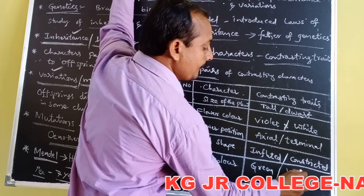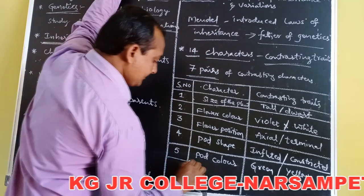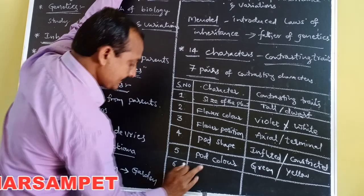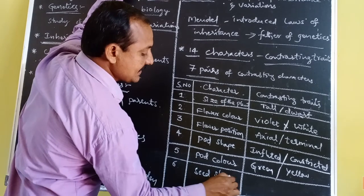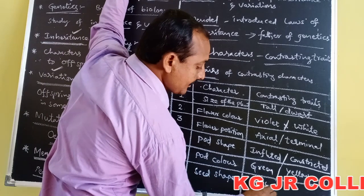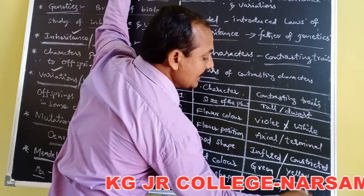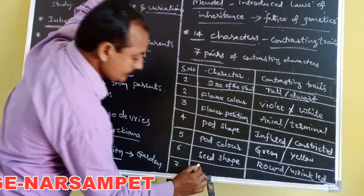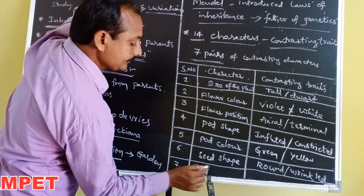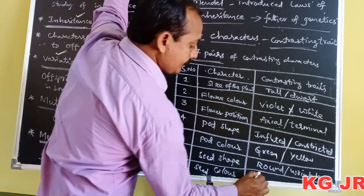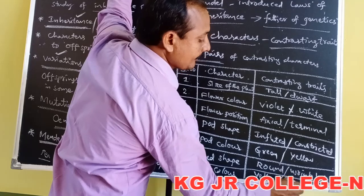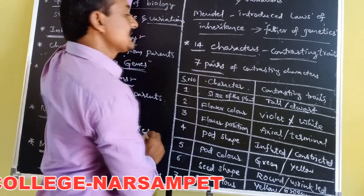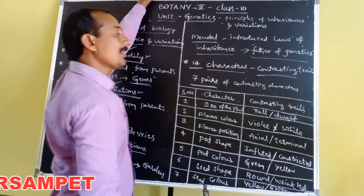Fifth contrasting character: pod color — green or yellow. Sixth contrasting trait: seed shape — round or wrinkled. A round-seeded plant is crossed with a wrinkled-seeded plant. Seventh contrasting trait: seed color — yellow or green. A yellow-seeded plant is crossed with a green-seeded plant. These are the seven pairs of contrasting characters, or 14 contrasting traits.